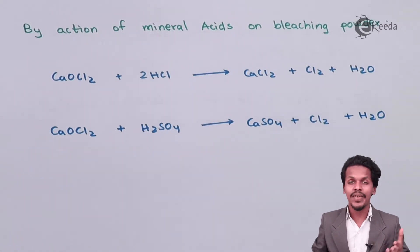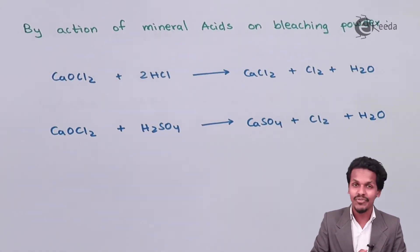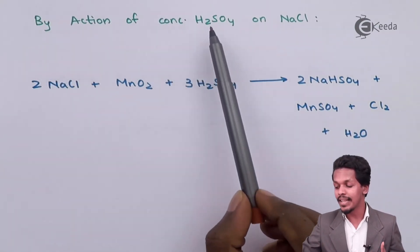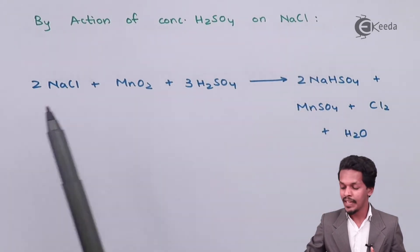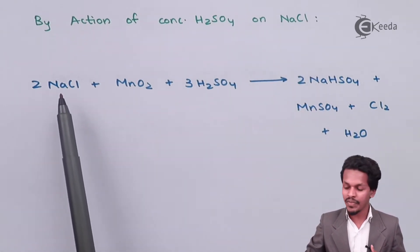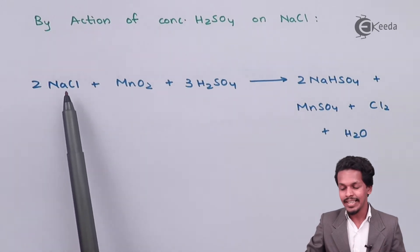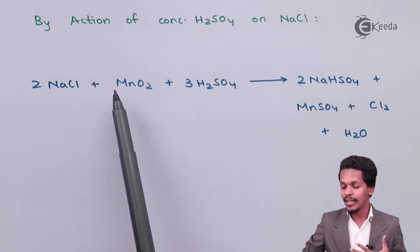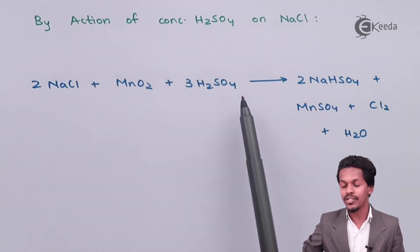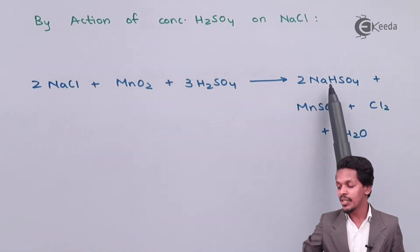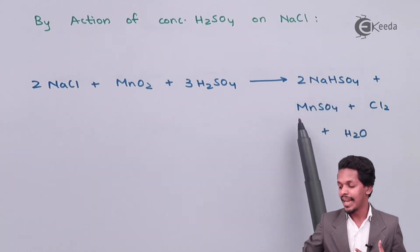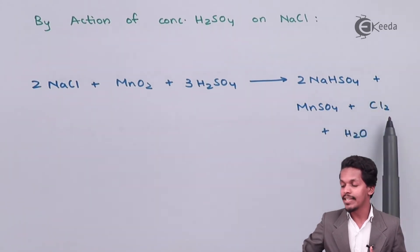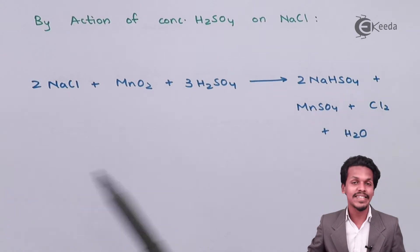The next method is obtaining Cl2 by the action of concentrated H2SO4 on NaCl. Sodium chloride contains Cl, which can be converted into Cl2 by treating 2 moles of NaCl with the oxidizing agent MnO2 along with 3 moles of H2SO4. The products obtained are sodium bisulfate, MnSO4 (manganese sulfate), H2O as a byproduct, and Cl2. So even this is a method where we can obtain Cl2.